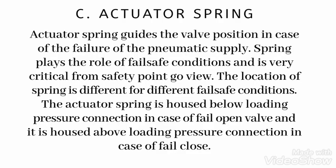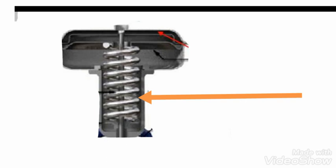The actuator spring guides the valve position in case of failure of the pneumatic supply. The spring provides the fail-safe condition and is very critical from a safety point of view. The location of the spring differs for different fail-safe conditions. It is housed below the loading pressure connection for a fail-open valve, and above it for a fail-close valve. Here you can see the spring is below the diaphragm — this is a fail-open valve because when there is no air, the spring pushes the diaphragm upward and makes the valve open.